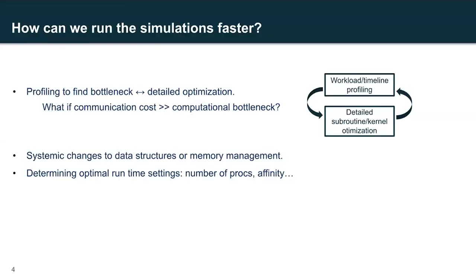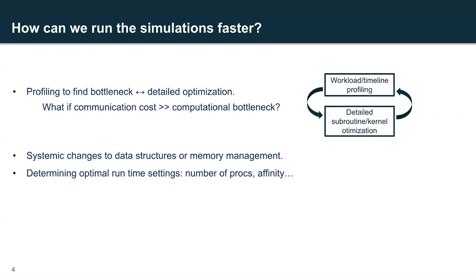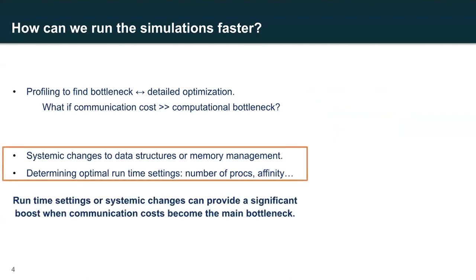So how do we make the simulations run faster? The usual approach to optimization starts with an overall profiling of the code to find the computational bottleneck and then diving into the code to do detailed optimization. But what if there is no specific computational bottleneck, or what if communication is cumulatively dominant over the computation? In that case, two other approaches are systematic changes to data structures or memory management, and then determining optimal runtime settings — for example, the optimal number of processors to run on. My takeaway is that when communication is the main bottleneck, these approaches have a significant impact on performance.